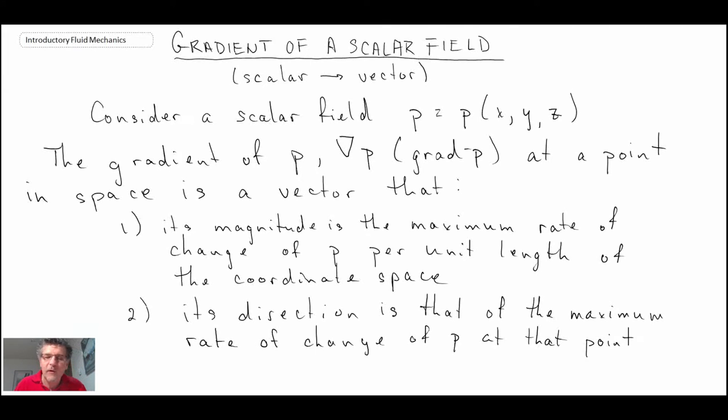So if you take the gradient of this scalar field P, what we'll find is that the resultant of the gradient, the magnitude of the gradient that is, it's a vector. Grad P will become a vector, but the magnitude of that vector is the maximum rate of change of P per unit length in that coordinate space.